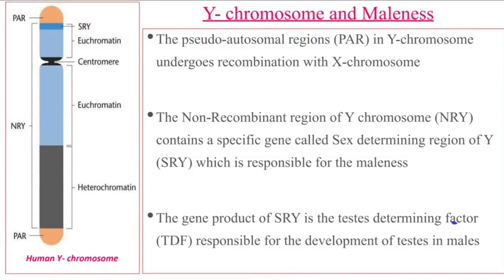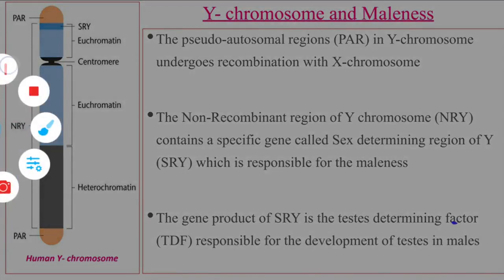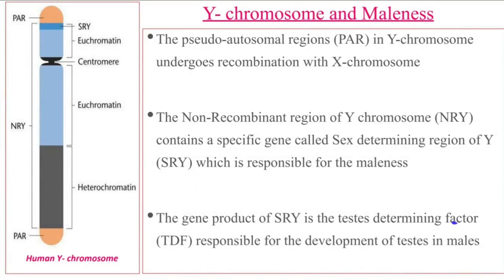Both ends of the Y chromosome have a pseudo-autosomal region. This region recombines with the X chromosome. The remaining 95 percent of the Y chromosome contains the non-recombining region of the Y chromosome, which is further divided into two regions: functional genes in the euchromatin region and non-functional genes in the heterochromatin region.